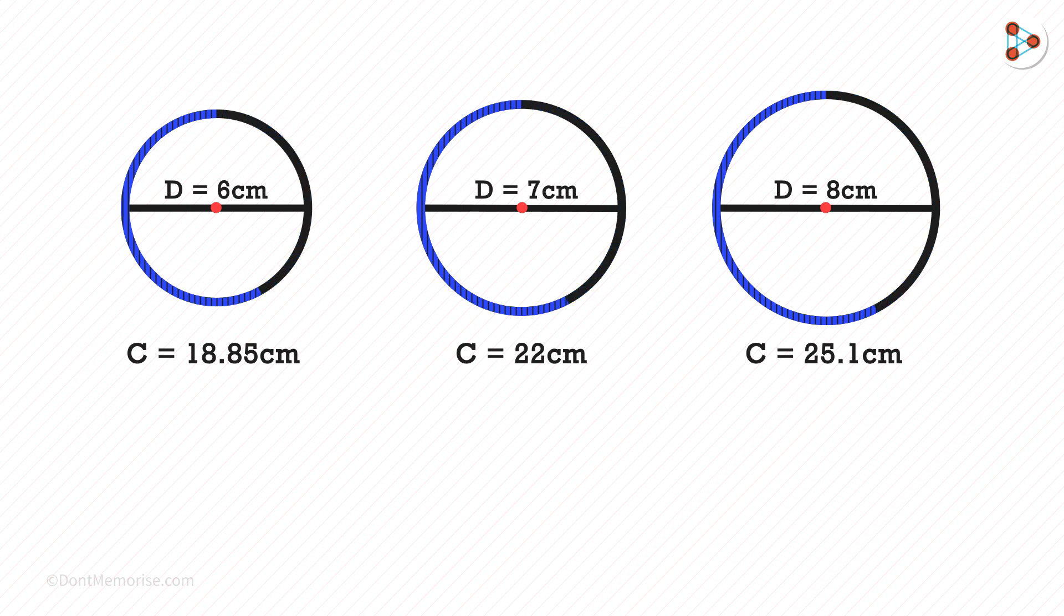Now why are we doing this? In all the cases, when you divide the circumference by the respective diameter, you will get the approximate answer as 3.14. And this constant is called pi.